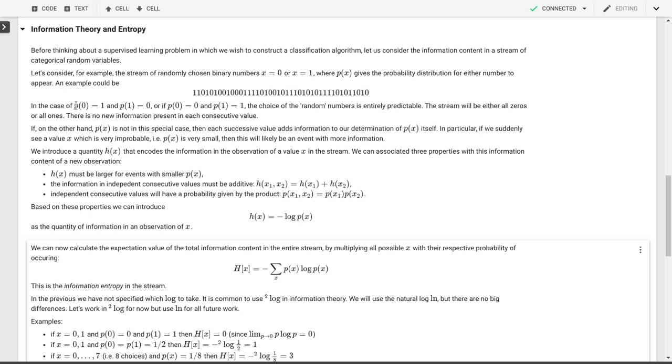Of course, if we have the probability for a zero equal to one, then necessarily the probability for a one will have to be zero, or the other way around. Then of course that random number sequence is entirely predictable. It will either be all zeros or all ones. So one of the things you realize then is if that probability is exactly equal to one, there's no new information in each consecutive value.